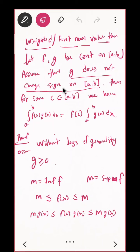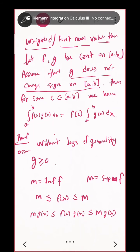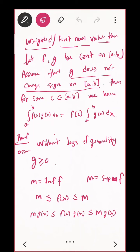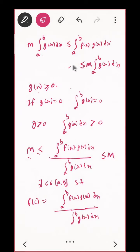My question now: why do we require that G does not change sign on [a, b]? What will be the problem if G changes sign? If G changes sign on [a, b], at some point G will be 0, and then we won't be able to divide.